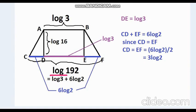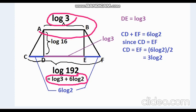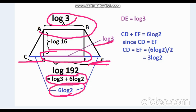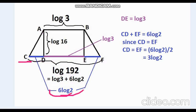Since log 192 equals log 3 + 6 log 2, and AB equals log 3, this part equals log 3, and these two parts together equal 6 log 2. Therefore, we got DE equals log 3.